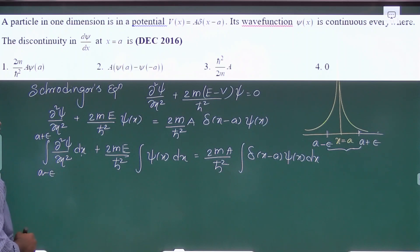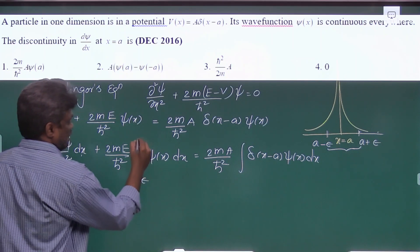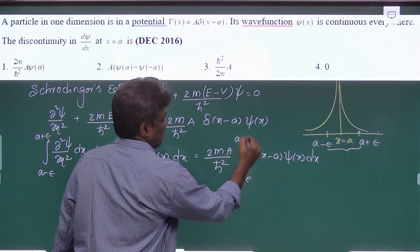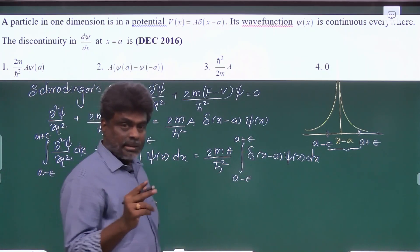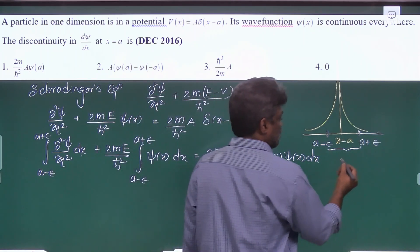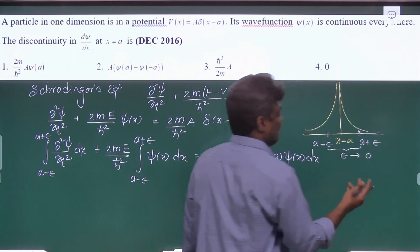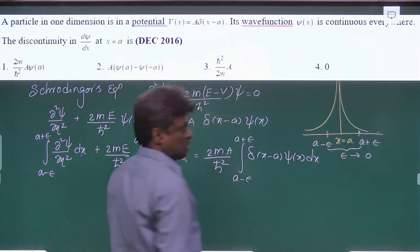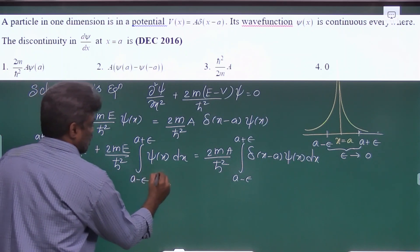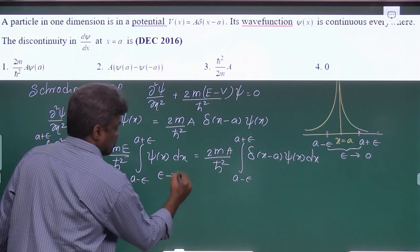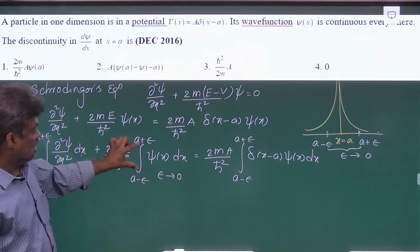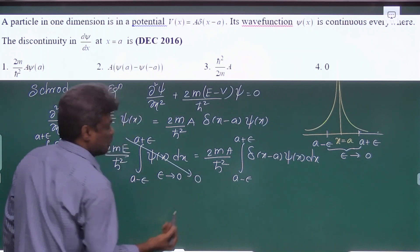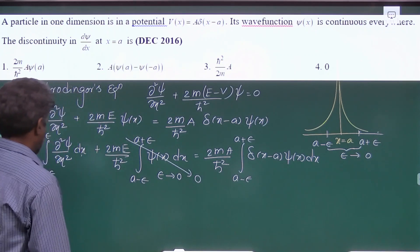The limits are from a minus epsilon to a plus epsilon. Since we are asking the discontinuity at x equal to a, we let epsilon tend to 0, which approaches x equal to a. As epsilon tends to 0, the width tends to 0 and the area under this curve equals 0.